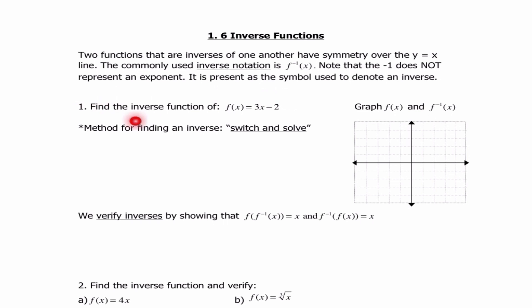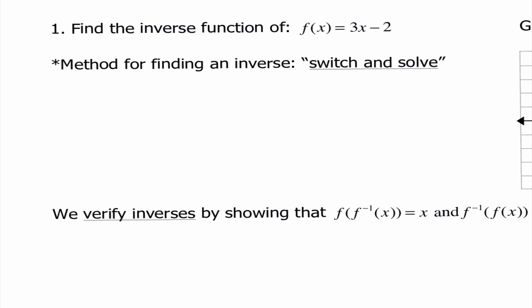Our very first problem says: find the inverse function of f of x equals 3x minus 2. We're going to do three things — find the inverse, verify the inverses, and look at their graphs. We're starting with finding the inverse using the switch and solve method. That means we switch the two variables x and y — switching the input and the output — and then solve the new equation for y.